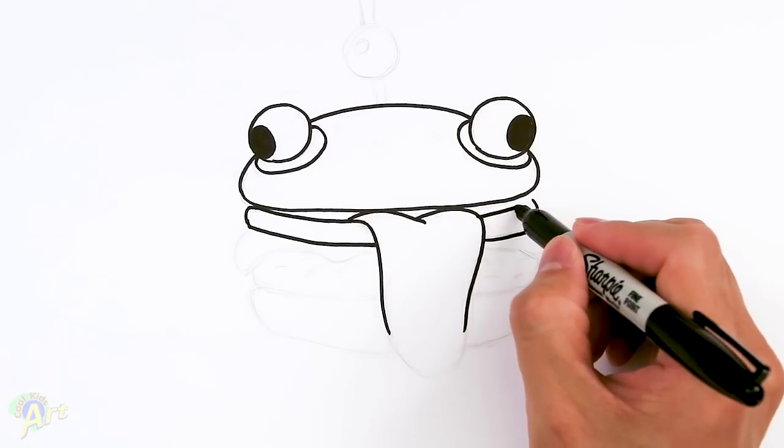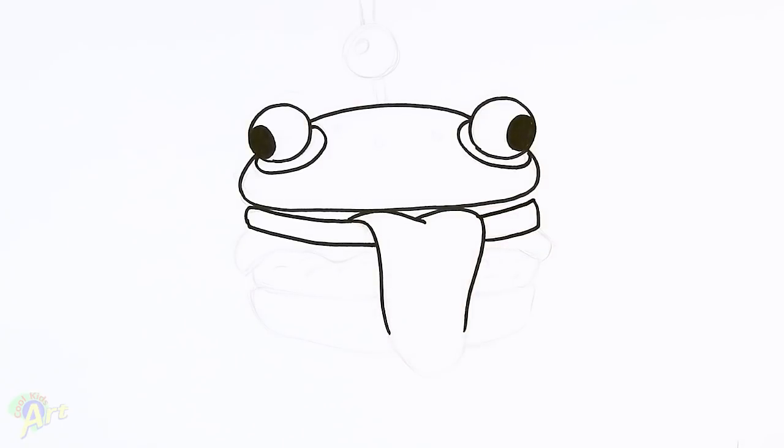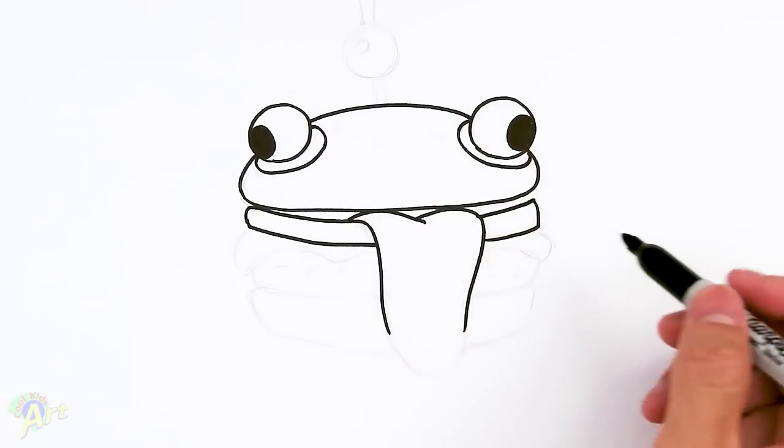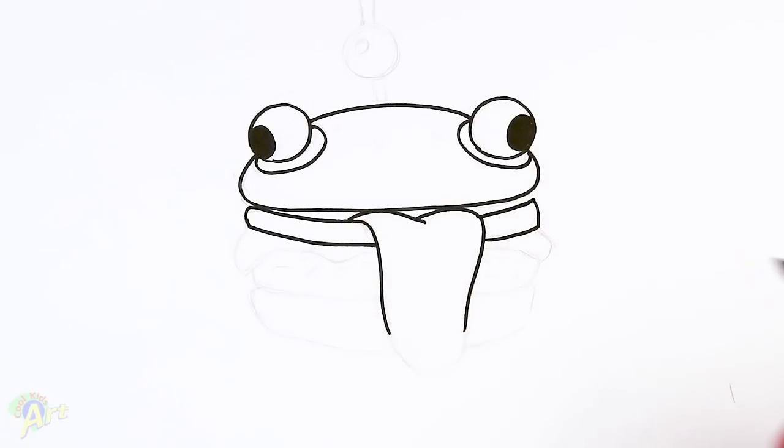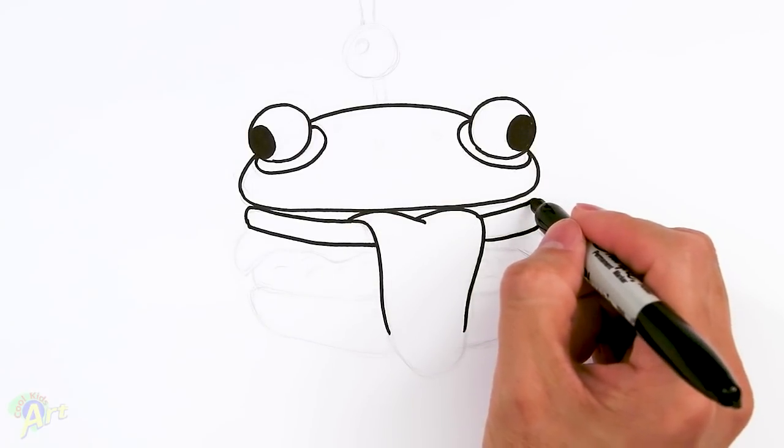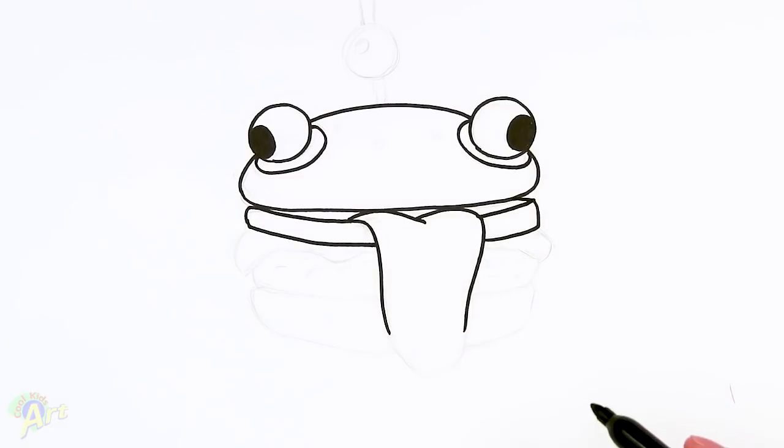Okay, and then on this side, just gonna continue that and just connect that. And it doesn't have to be all straight, right? Because it's organic, so it can be a little bit wobbly. And then any space in here, just kind of go in. So it looks like it's one slice of tomato.